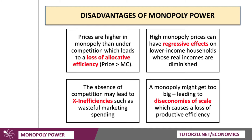So there we go — four key disadvantages of monopoly. Notice that we're using key terms here: allocative efficiency, regressive effects, real incomes, X-inefficiency, diseconomies of scale, productive efficiency. When you're writing about monopoly, don't forget to use those welfare and efficiency concepts — you'll get much higher marks in your papers.